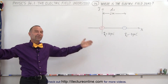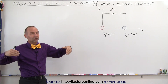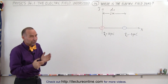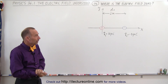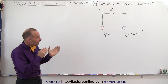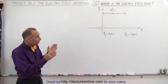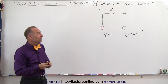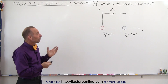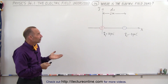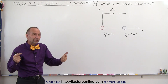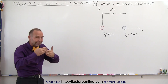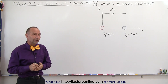Besides points at infinity — if you're infinitely far away from any charge, the electric field will always be zero — we want to find where, relatively close in proximity on the x-axis, the electric field will be zero. That will be the point where the two electric fields from the two charges perfectly cancel each other out.